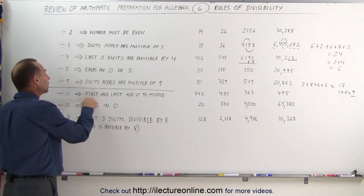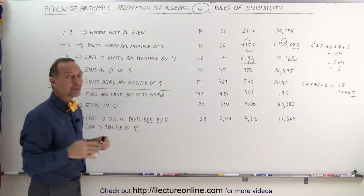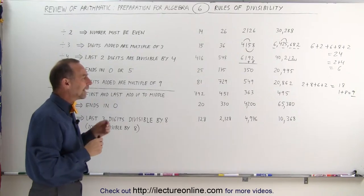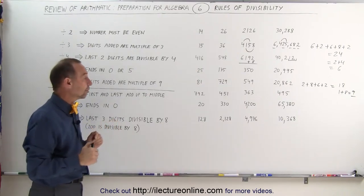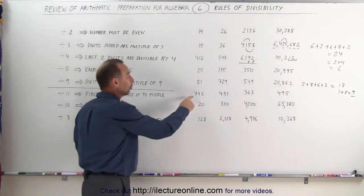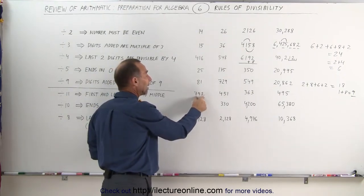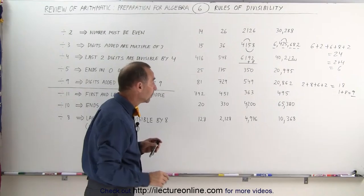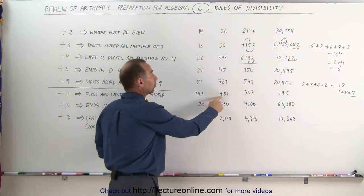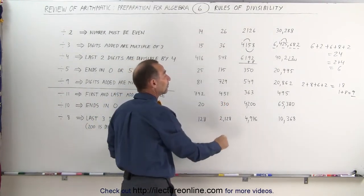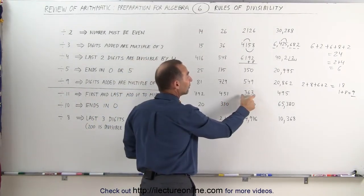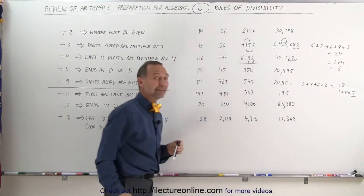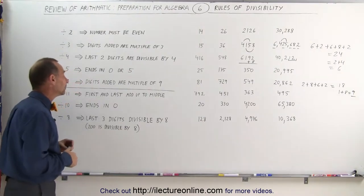On the rule for divisibility by 11, we need a 3-digit number — it only really works for 3-digit numbers, and for certain ones. If the first and the last digit add up to the middle digit, the whole number is divisible by 11. For example, 4 plus 1 is 5, so we can divide that by 11. 3 plus 3 is 6, so we can divide that by 11. And 4 plus 5 is 9, so we can divide that by 11. Really handy to know that.